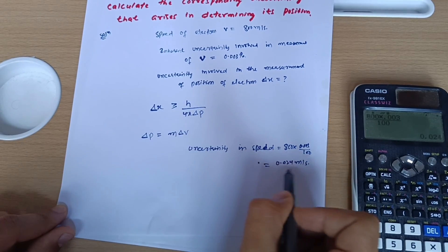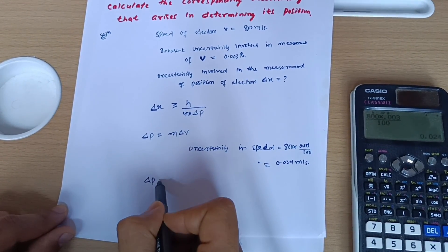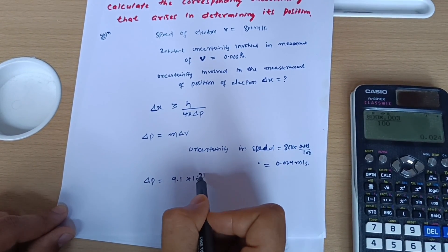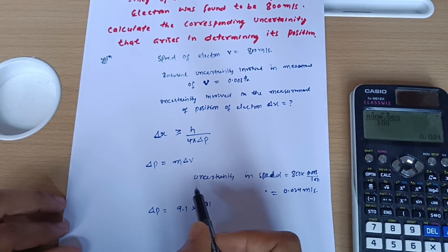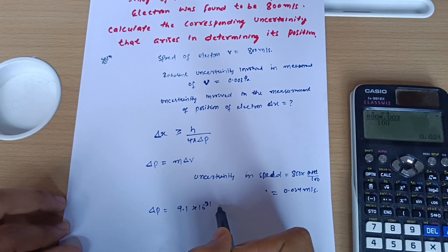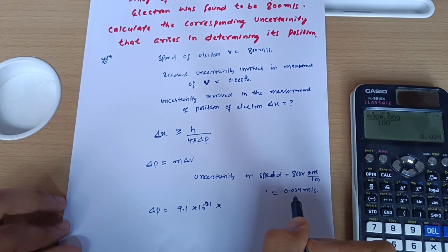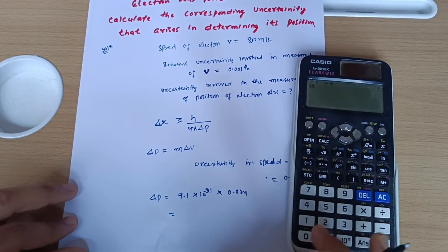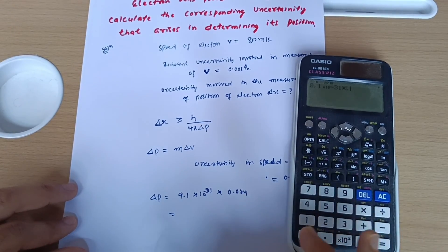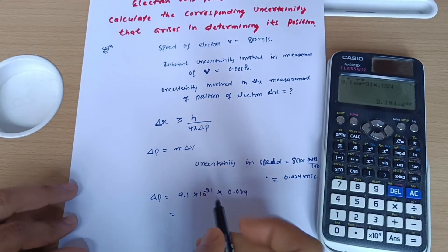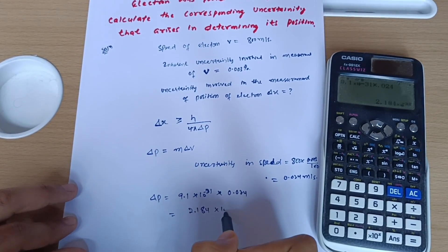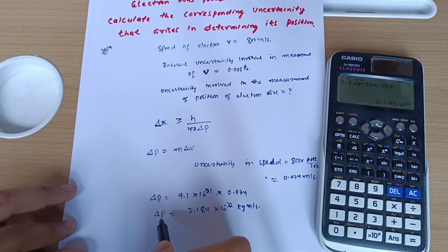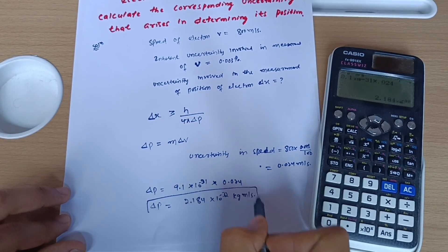Now putting this value of delta v into delta p: delta p equals m multiplied by delta v. The mass of an electron is 9.1 into 10 power minus 31 kg. So delta p equals 9.1 × 10⁻³¹ multiplied by 0.024, which equals 2.184 × 10⁻³² kg·m/s. This is the uncertainty in momentum.